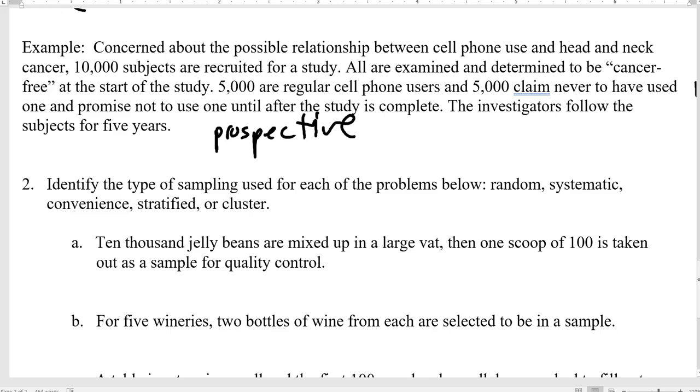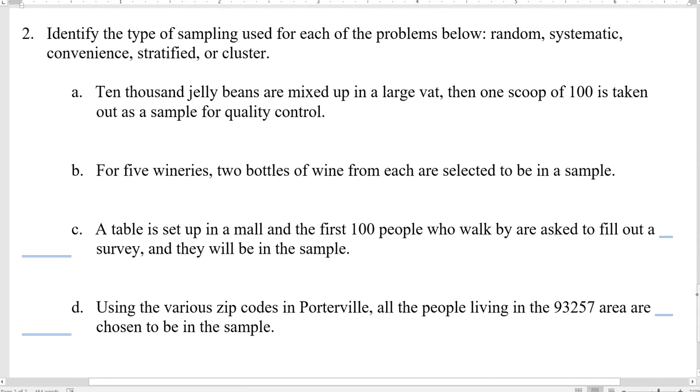10,000 subjects are recruited for a study. All are examined, determined to be cancer-free at the start of the study. 5,000 are regular cell phone users. 5,000 claimed to never have used one and promised not to use one until after the study is completed. The investigators follow the subjects for five years. We're looking at stuff from the future. We're comparing them to themselves and the future. That is prospective.